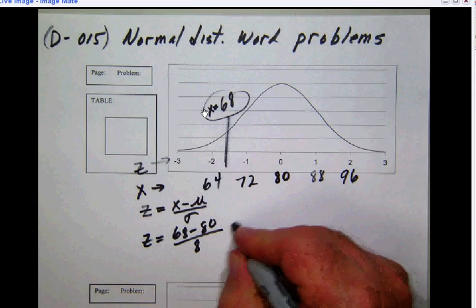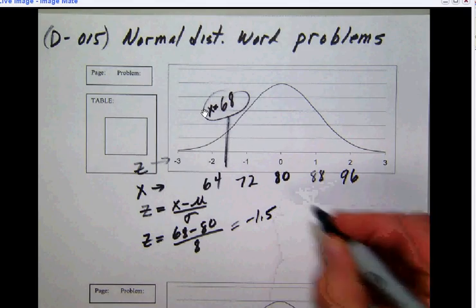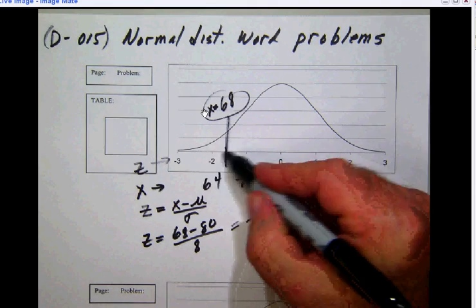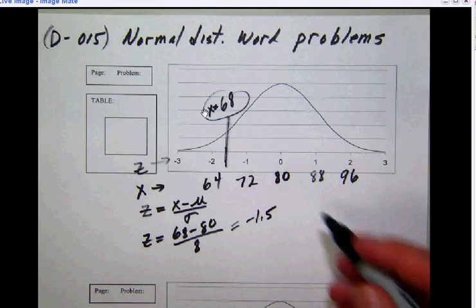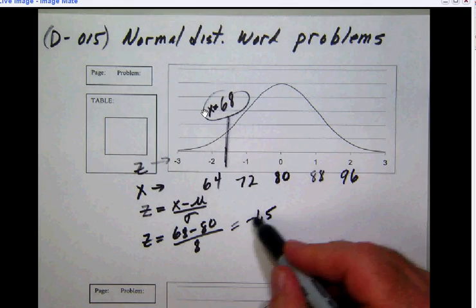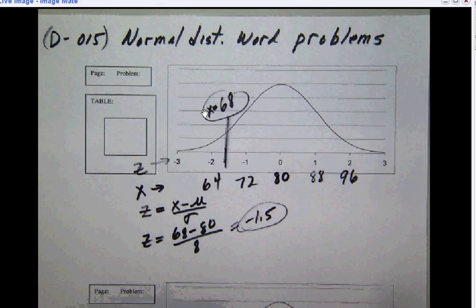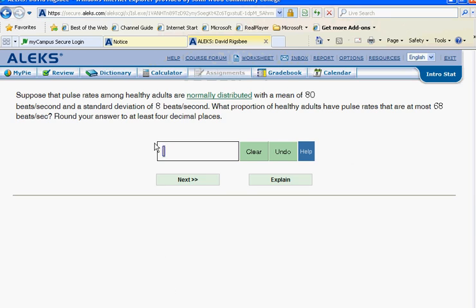So z equals negative 1.5. So down here in our z-scores, we can see that that's about right—it's about halfway between the negative 1 and the negative 2. So our z is a negative 1.5. Now let's go back and look at the question that they asked us in ALEKS.